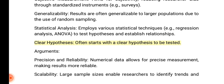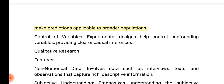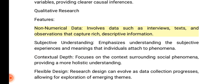Arguments for quantitative research — precision and reliability: numerical data allows for precise measurement, making results more reliable. Scalability: large sample sizes enable researchers to identify trends and make predictions applicable to broader populations. Control of variables: experimental designs help control confounding variables, providing clearer causal inferences.